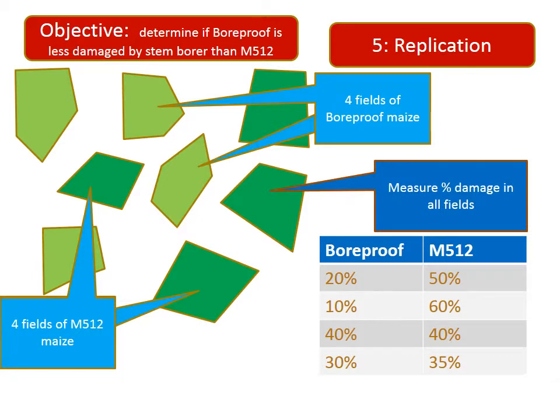So here is my third attempt. Rather than having just one field of each treatment, I now have four of each — eight fields in total. I have introduced some replication. When I measure percent damage on each field, I found that in general there is less in the fields of bore-proof, and the mean for bore-proof is certainly smaller than the mean damage for M512.